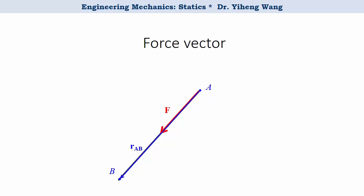Since the position vector from point A to point B has the same direction as the force, we can use the position vector rab to find the unit vector uab which is given by this equation.